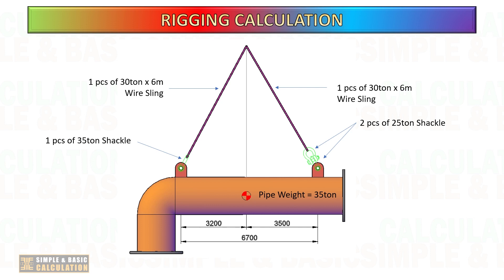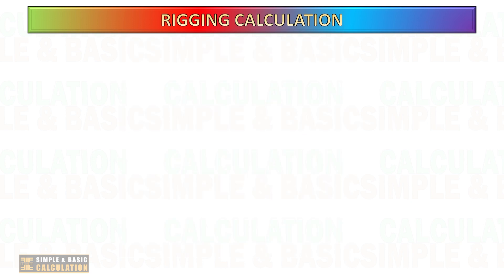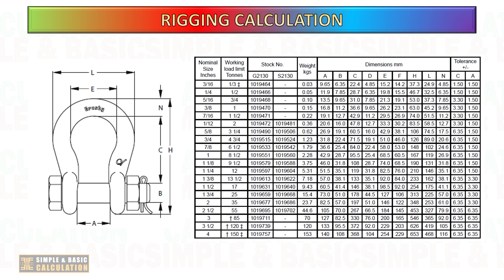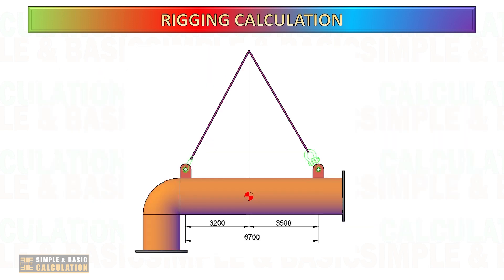Let us do the calculation based on this given sketch. Based on the rigging sketch, we're using one piece of 35-ton shackle at lifting point number 1 and two pieces of 25-ton shackle at lifting point number 2. Shackle dimensions as shown in the table for 25-ton and 35-ton shackle.